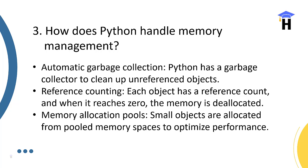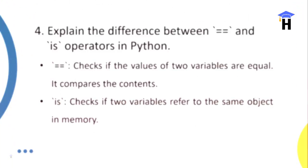Memory allocation pools: small objects are allocated from pooled memory spaces to optimize performance. These activities are done automatically in Python while compiling and running the app. This is a very important question for beginners, freshers, or experienced persons who want to give memory management answers.